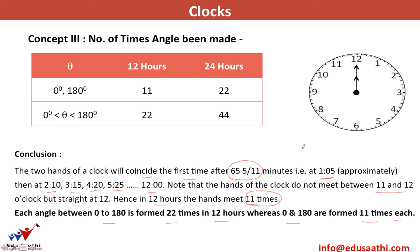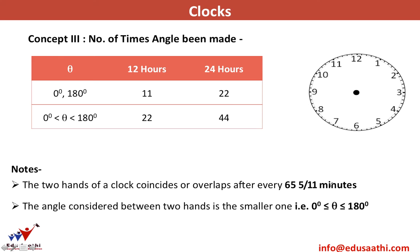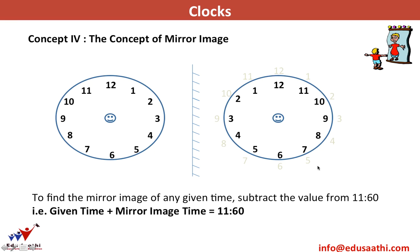As already proved, the two hands coincide every 65 5/11 minutes. The angle considered between the two hands is always the smaller one — between 0° and 180°. Now let's move to the fourth concept: mirror image.